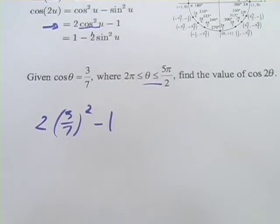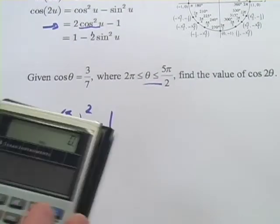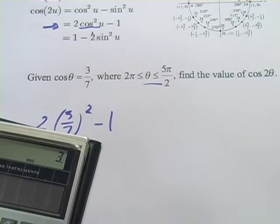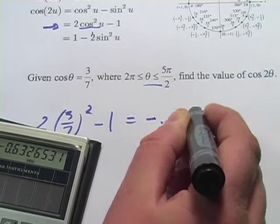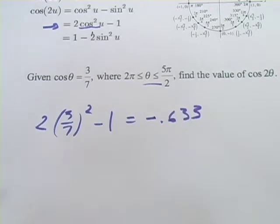Now at this point all you have to do is plug that through your calculator. So we'll start with 3/7 and then we'll square that and then we'll multiply by 2 and we'll subtract 1. And we get negative 0.633 and that would be our answer for that one.